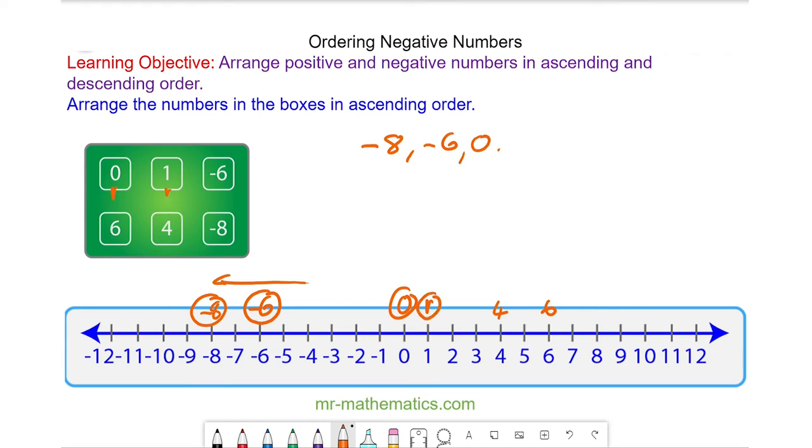Then we have 1, and 4, finally 6. So these are the numbers arranged in ascending order.